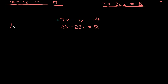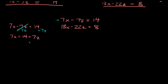We're going to use 7x minus 7z equals 14 and solve for x. To isolate x, we add 7z to both sides — those cancel out — leaving 7x equals 14 plus 7z. Dividing both sides by 7, those cancel out and we're left with x is equal to 2 plus z.